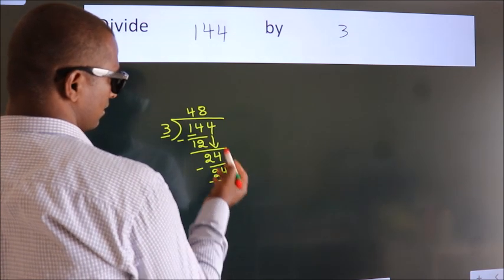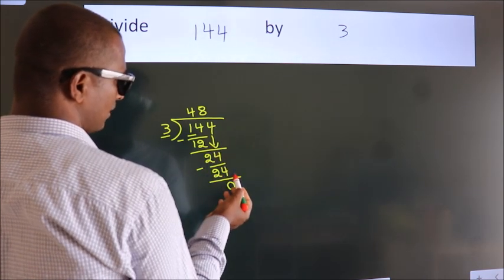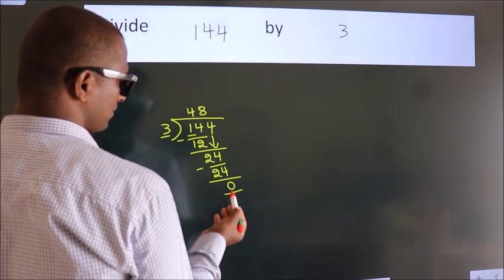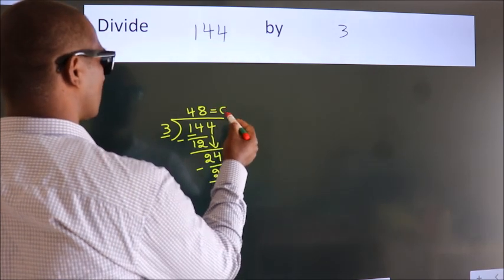After this, no more numbers to bring it down and we got remainder 0. So this is our quotient.